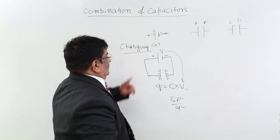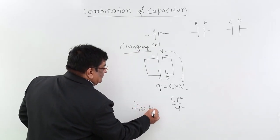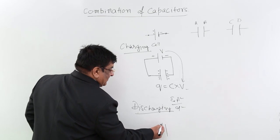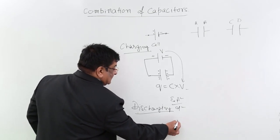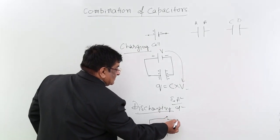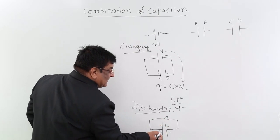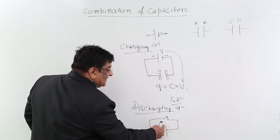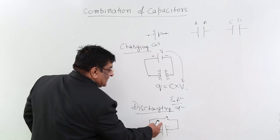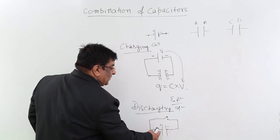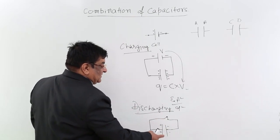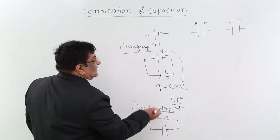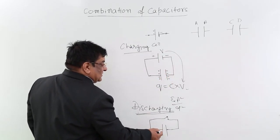Now let us look at charging and discharging. For discharging: the capacitor has positive and negative charges. When we connect the two plates externally, the electrons immediately jump to the positive plate due to attraction. The dielectric or air between the plates does not allow electrons to pass through the gap, so electrons travel through the external connection and neutralize the positive charges. Both plates become zero — this is discharging. Charging and discharging are the two fundamental operations of a capacitor.